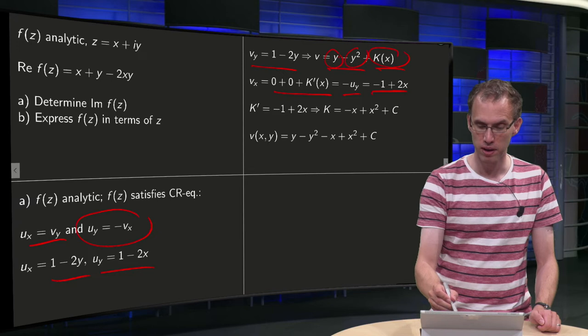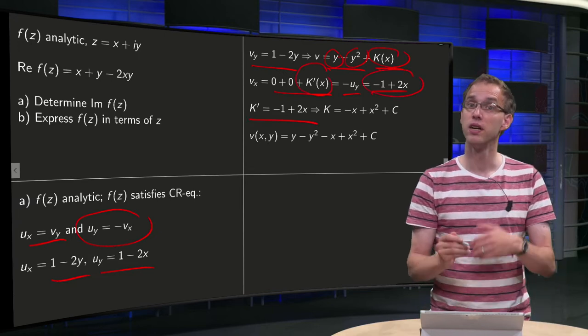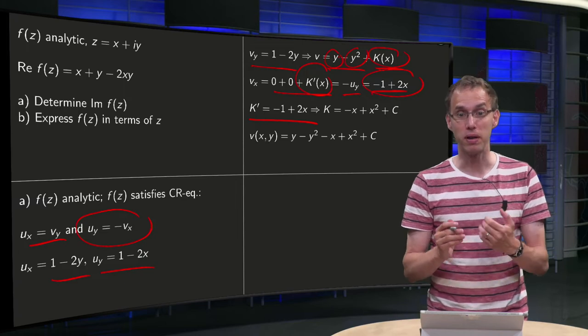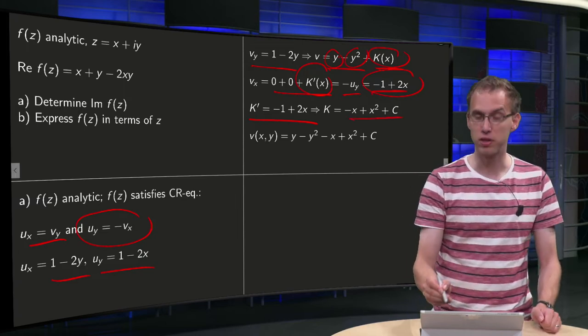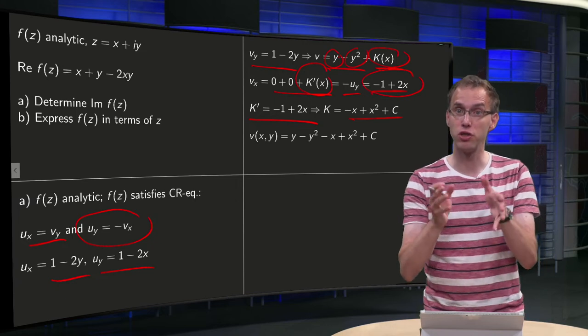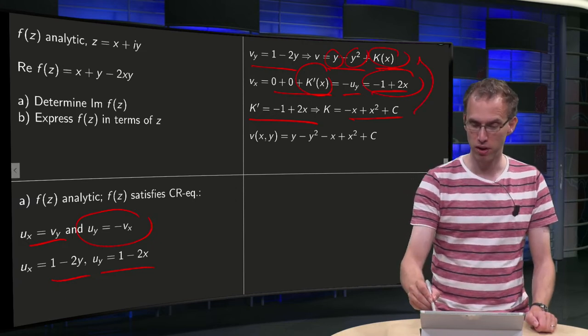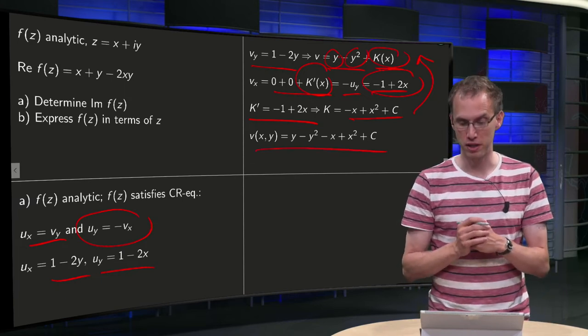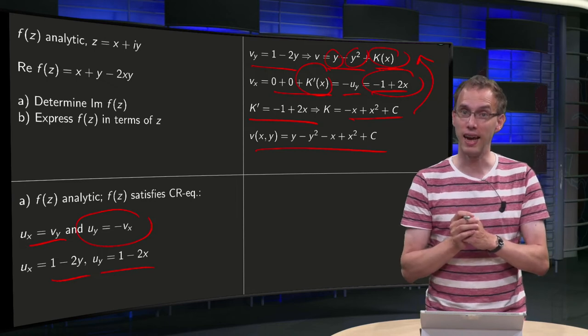So now we have K', K' = -1 + 2x, so we can integrate with respect to x. So if we integrate with respect to x, you get -x + x² plus a constant, and this constant is just a number. So there we are, we have our K, plug it into our v over here. So there we have our v(x,y): y - y² - x + x² plus a constant. That's the answer to part A.